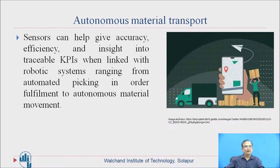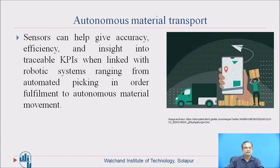Sensors can help give accuracy, efficiency and insight into traceable KPIs linked with robotic systems, ranging from automated picking in order fulfillment to autonomous material movement. Key performance indicators can be satisfied with the help of these sensors. Sensors give accuracy, efficiency and insight into traceable key performance indicators when linked with robotic systems, making this an effective way of doing transportation of equipment and materials in construction processes.